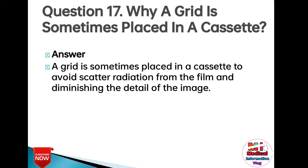Question 17: Why is a grid sometimes placed in a cassette? Answer: A grid is sometimes placed in a cassette to avoid scatter radiation from reaching the film and to prevent diminishing the detail of the image.